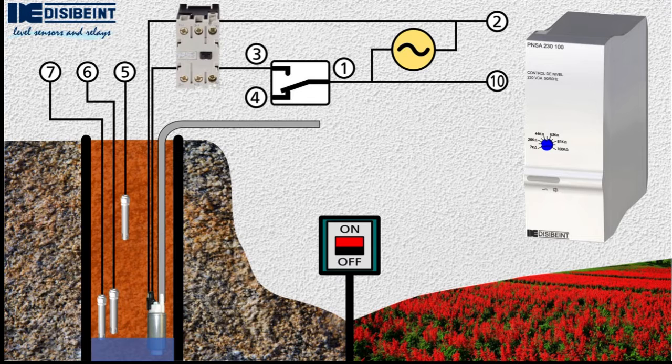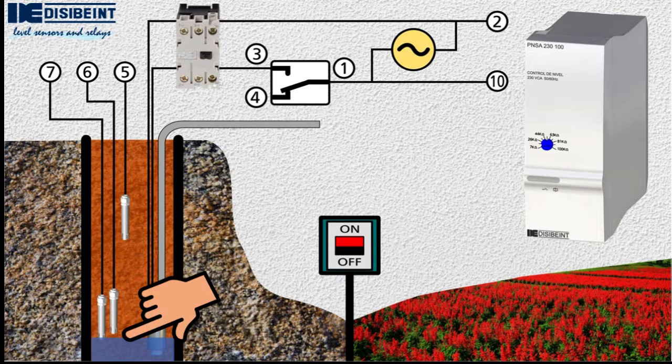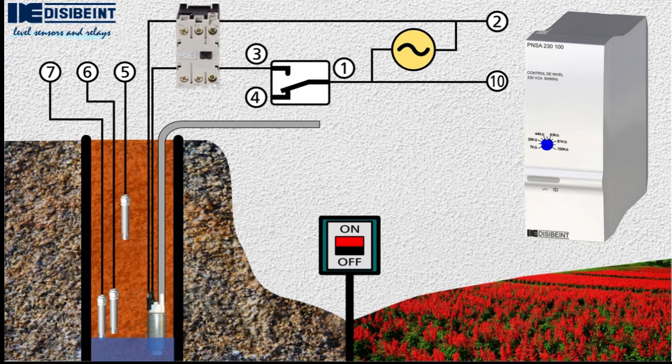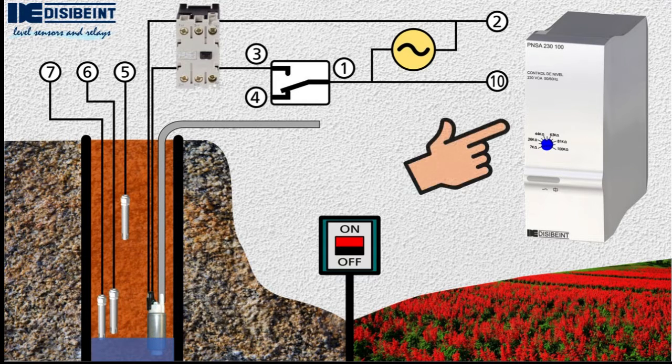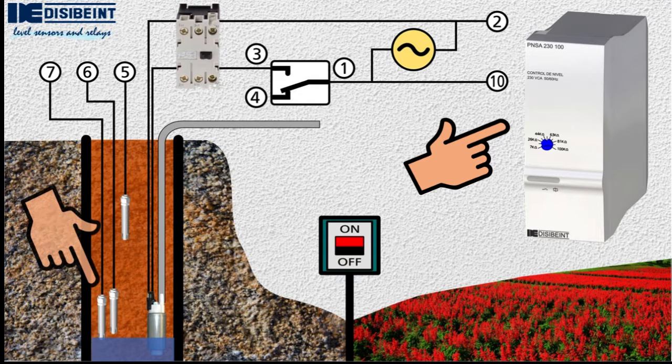Since we do not want our pump to work empty and burn out, we have to control that it stops working when there is not enough water left in the well. To carry out this control we use a PNSA level relay to which we will connect the NS conductive probes responsible for detecting the presence of water.